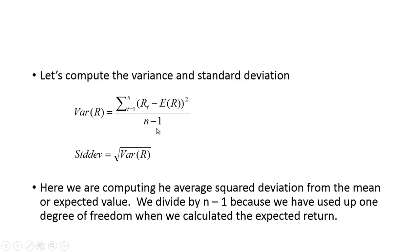If you had a thousand observations, dividing by a thousand or dividing by 999 isn't going to make much of a difference. But if you have fewer observations, like in our previous example where we only had three observations, then it's going to make a difference. You may recall that the standard deviation is just the square root of the variance.